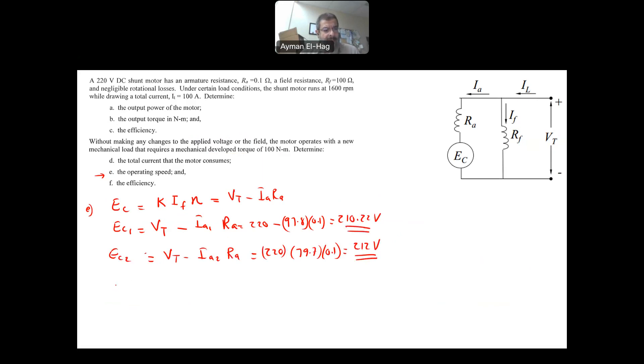Okay, perfect. Now, EC1, which is equal to 210.22 is equal to K IF times N1, and EC2 equal to 212 K IF, IF doesn't change, N2. So, divide these two together, this will cancel. N1, we know it is equal to 1600, so from this you can find your N2 is basically equal to 1613.5 RPM. And this tends to make sense, because now I'm reducing the torque, when I reduce the torque, expect the speed to increase. That is normal reaction, and your result is really matching the common sense.